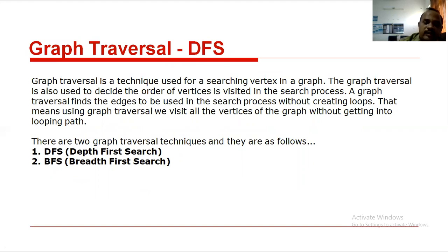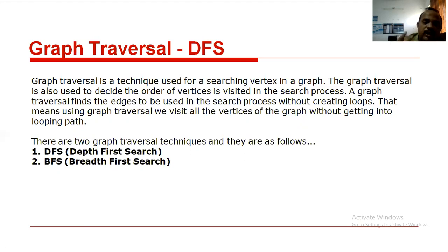Tomorrow we will discuss graph traversal algorithms — the most important ones. There are two types: DFS (Depth First Search) and BFS (Breadth First Search). Just as trees have in-order, pre-order, and post-order traversals, graphs have DFS and BFS. These are highly important for the final examination. Tomorrow we will discuss DFS and BFS algorithms.